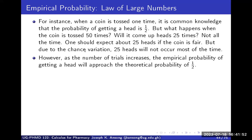But the law of large numbers says that if you increase the number of trials — so instead of 50, you do it 1000, 2000, or 5000 times — the empirical probability of getting a head will approach the theoretical value of one-half. You'll be approaching the one-half probability that you expect. It is also used to approximate discrete probability distributions to continuous ones, which we'll look at later.